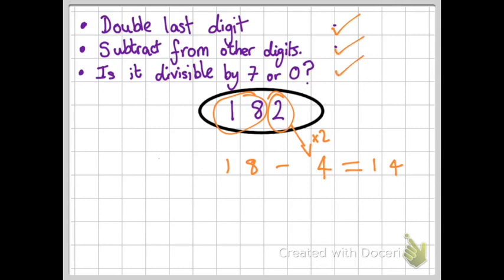And the third step is, is the number that I'm left with divisible by seven or is it zero? Well I know that 14 is in the seven times table. So I know that 182 is in the seven times table.